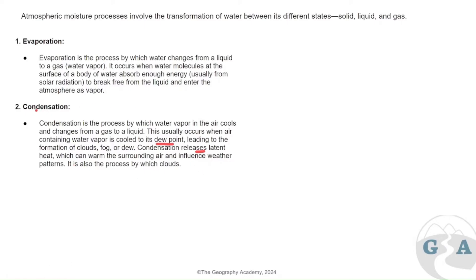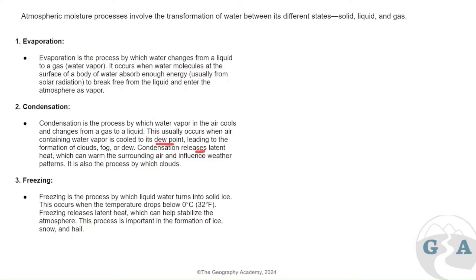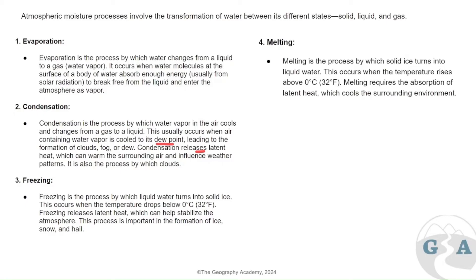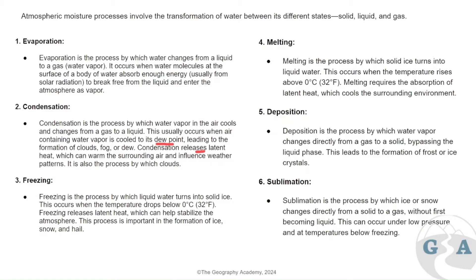Condensation causes the production of clouds, and enough of it causes precipitation. Freezing is where liquid turns into solid ice below zero degrees, releasing latent heat to stabilize the atmosphere — this can produce ice, snow, and hail. Melting occurs above zero degrees and absorbs latent heat. Deposition is when water vapor turns from a gas directly into a solid without becoming liquid in between, and sublimation is the opposite — going from a solid to a gas without becoming liquid.